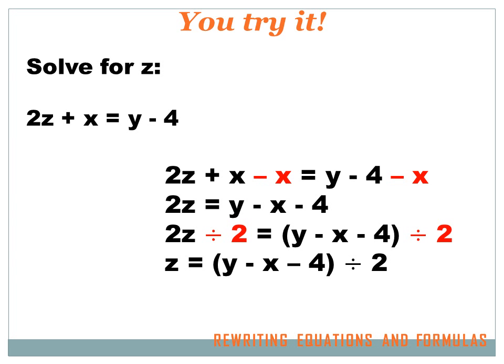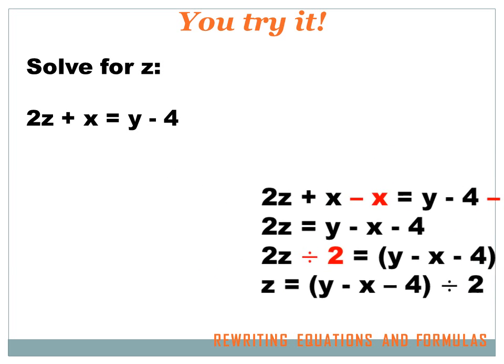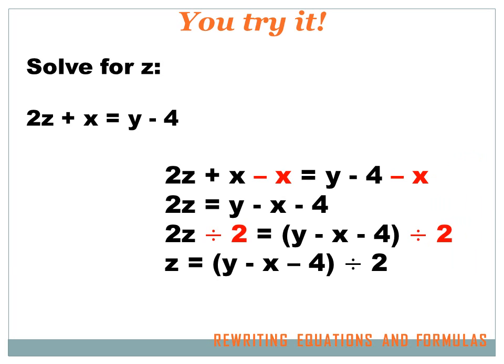We're supposed to solve for z, and the equation is 2z plus x equals y minus 4. First I need to get rid of the plus x, so I subtract x from both sides. The plus x and minus x cancel each other out, and I can rewrite this as 2z equals y minus x minus 4. Now I want to get rid of the 2, leaving just z, so I divide both sides by 2. The left side becomes just z, and z equals the expression y minus x minus 4, all divided by 2.